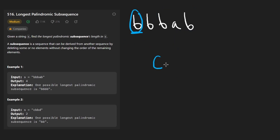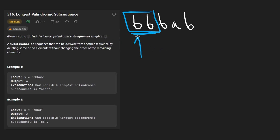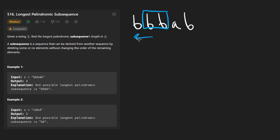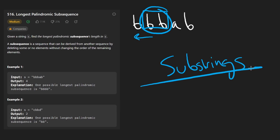We might try to expand again, but there are no more characters on one side. To get even-length palindromes, we start at each pair of characters and check if they match before expanding. But this problem is not about substrings — it's a bit more complicated. We are talking about subsequences here. So how do we get the longest palindromic subsequence?